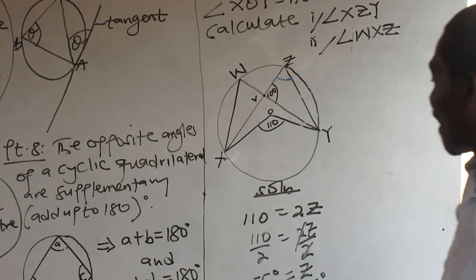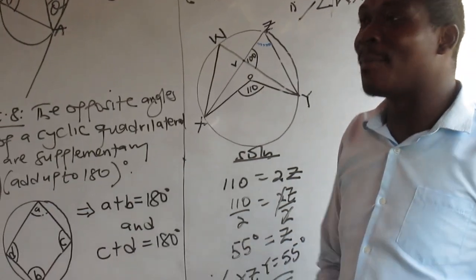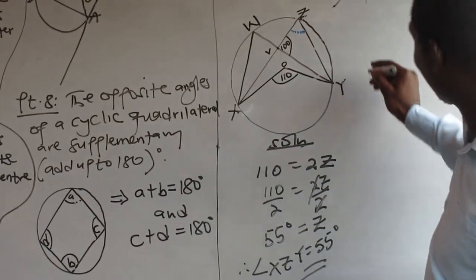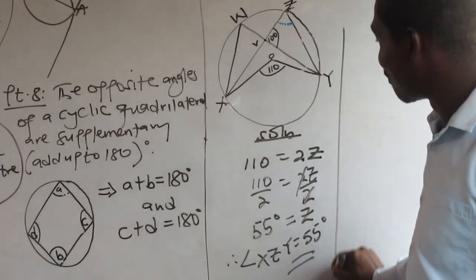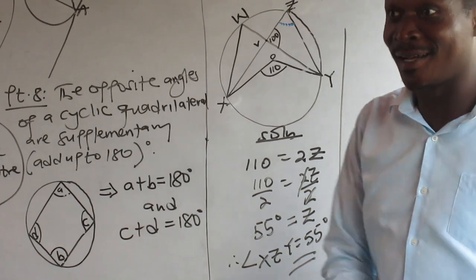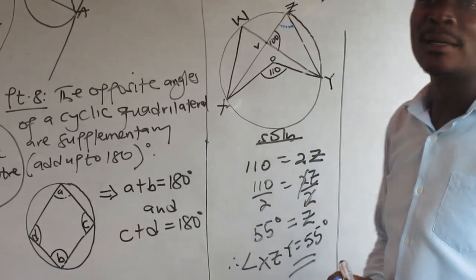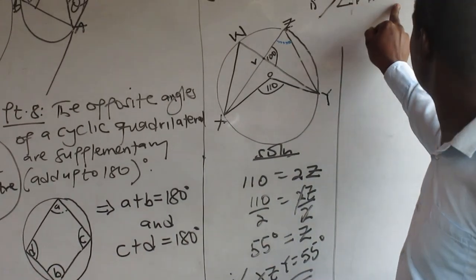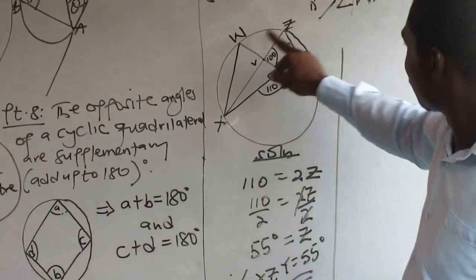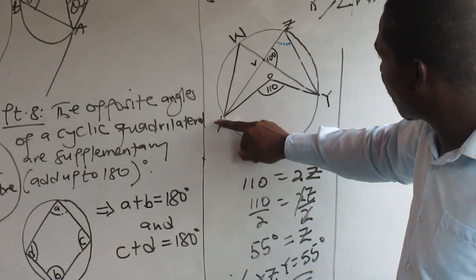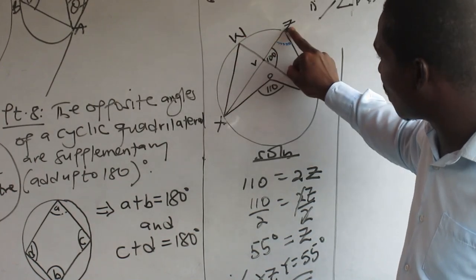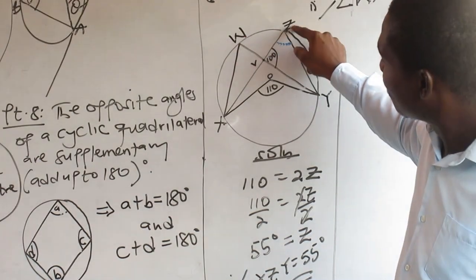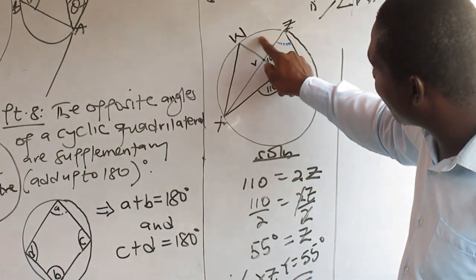Now I have one angle found. I'm done with that. Now I need angle WXZ. Look at where Z is. We know Z is 55. So WXZ — look at this configuration. Z naturally lies at a certain position on the circle.